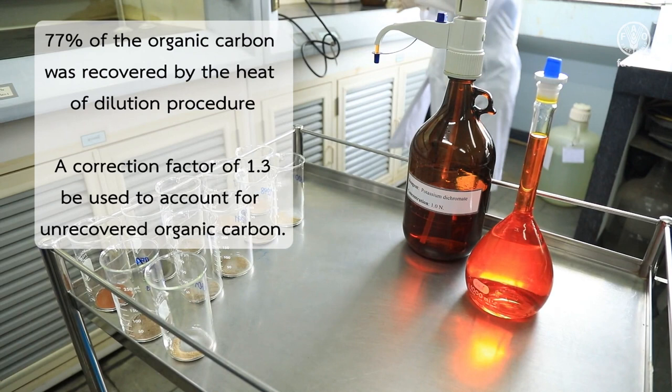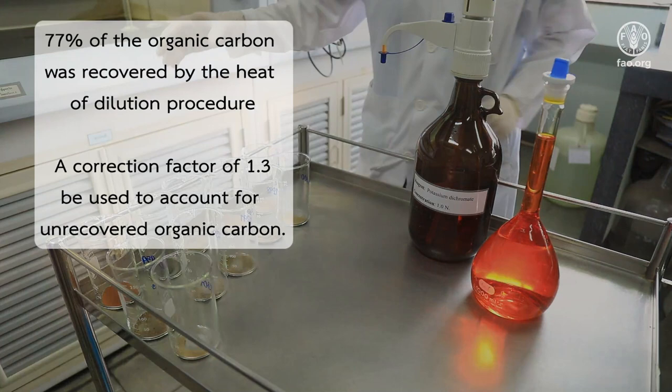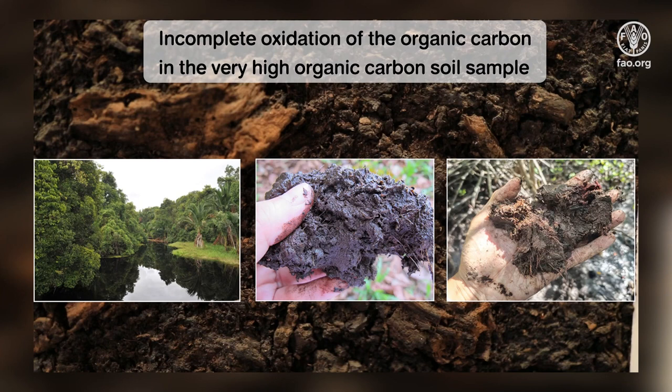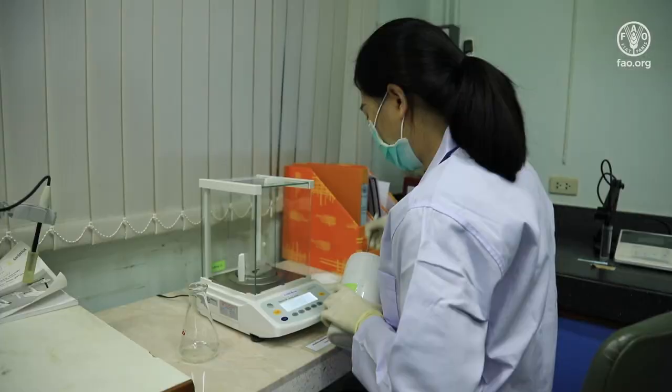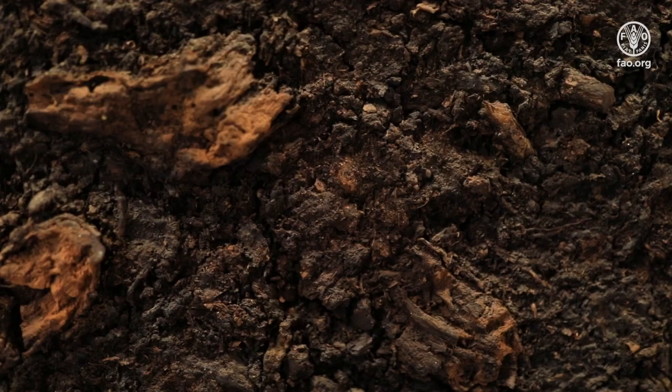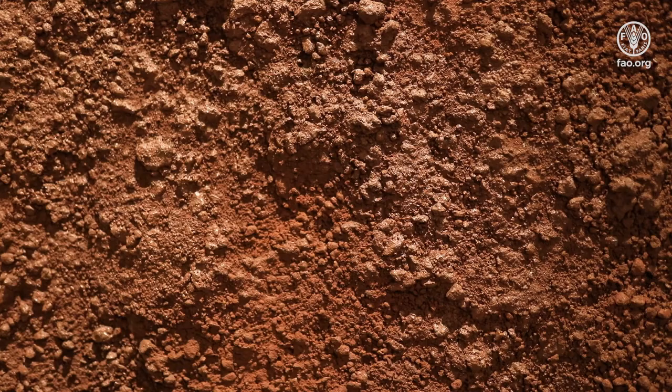A correction factor of 1.3 should be used to account for unrecovered organic carbon. For soils with high organic carbon content, the Walkley and Black method may underestimate the result due to incomplete oxidation of the organic carbon in the sample. Therefore, in case of samples with very high carbon content, smaller sample weights should be used.